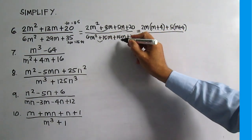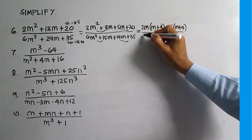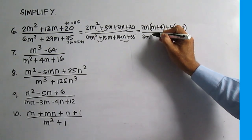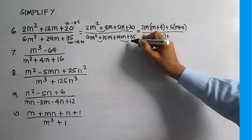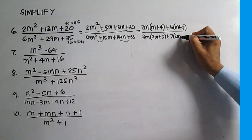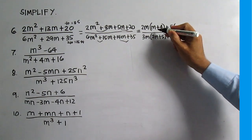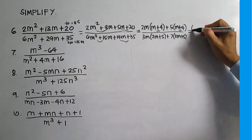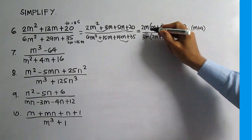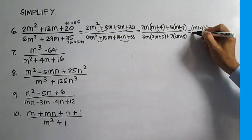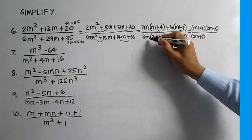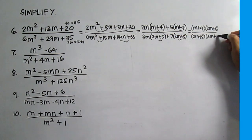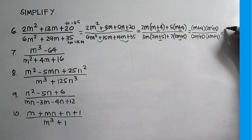Group the first two terms and the next two terms in the denominator. The common monomial factor is 3M and the other factor is 2M plus 5; then 7 and the other factor is 2M plus 5. Note that M plus 4 is common. Factor out M plus 4 — the other factor is 2M plus 5 — all over the common factor 2M plus 5 and the other factor 3M plus 7. Divide. The answer is M plus 4 over 3M plus 7.